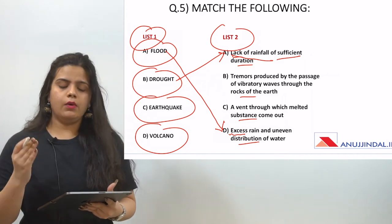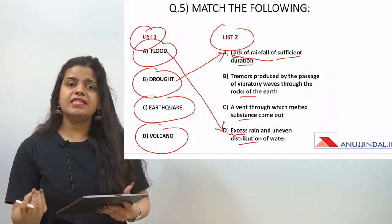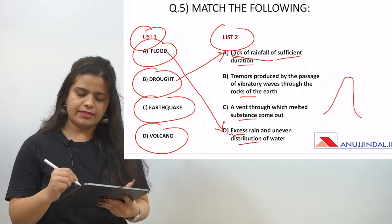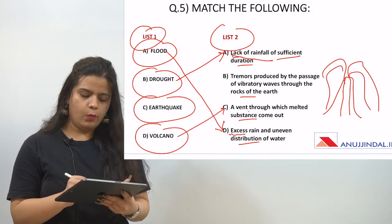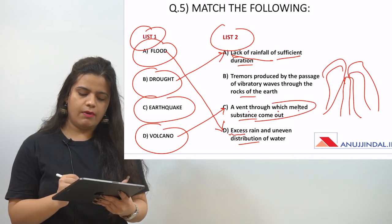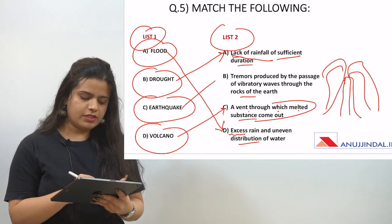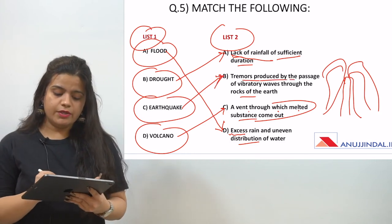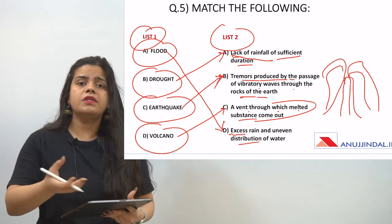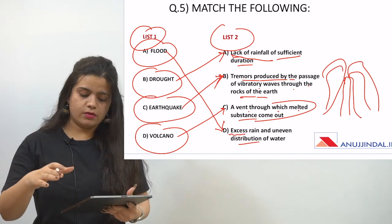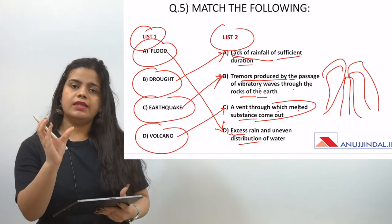For volcano, it is something where a lot of melted substance — lava — comes out from the earth's surface. For earthquake, the definition is: tremors produced by the passage of vibratory waves through the rocks of the earth. These tremors and sounds are produced when the earth shakes because of vibratory waves passing through it — which is what we call an earthquake, or 'bhukamp' in Hindi.